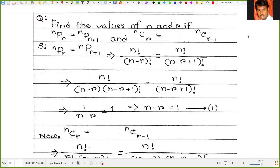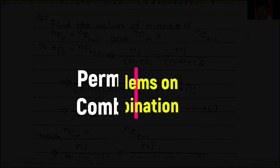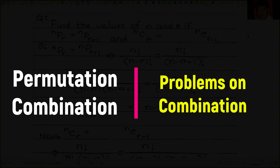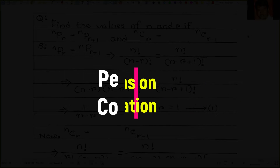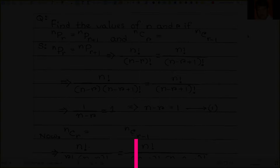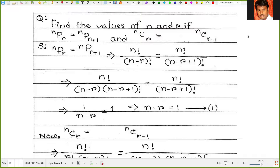Welcome back to the video series on permutation and combination. In the previous video we discussed combination and some problems on combination. In this video we will discuss some more problems on combination. Let's start with the first example.